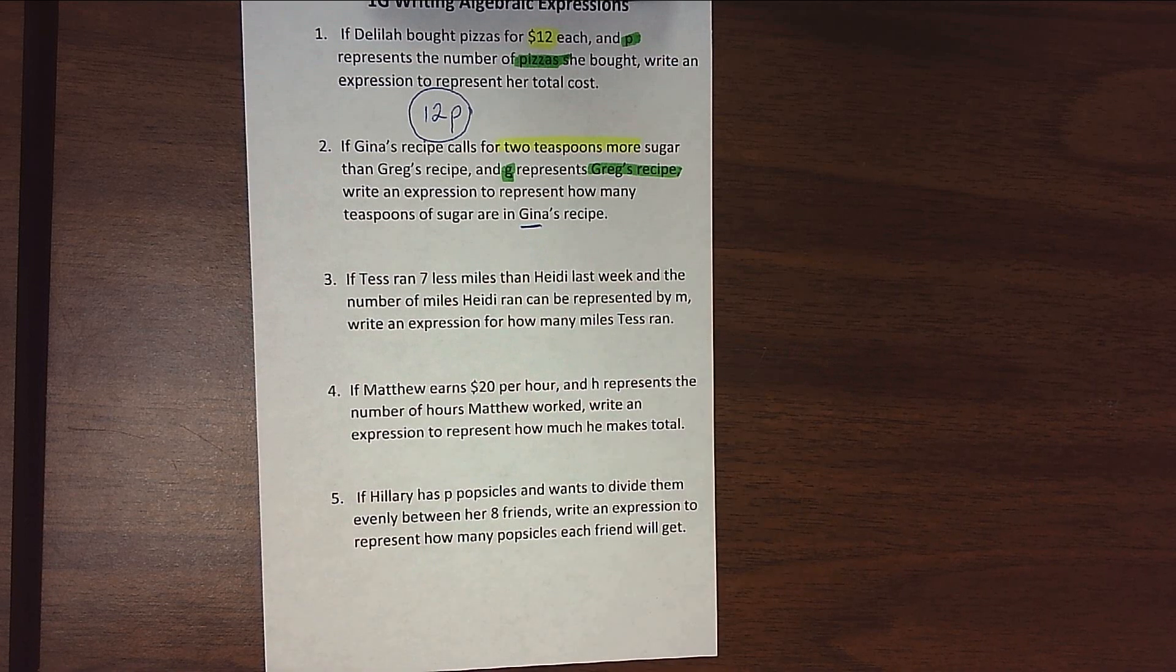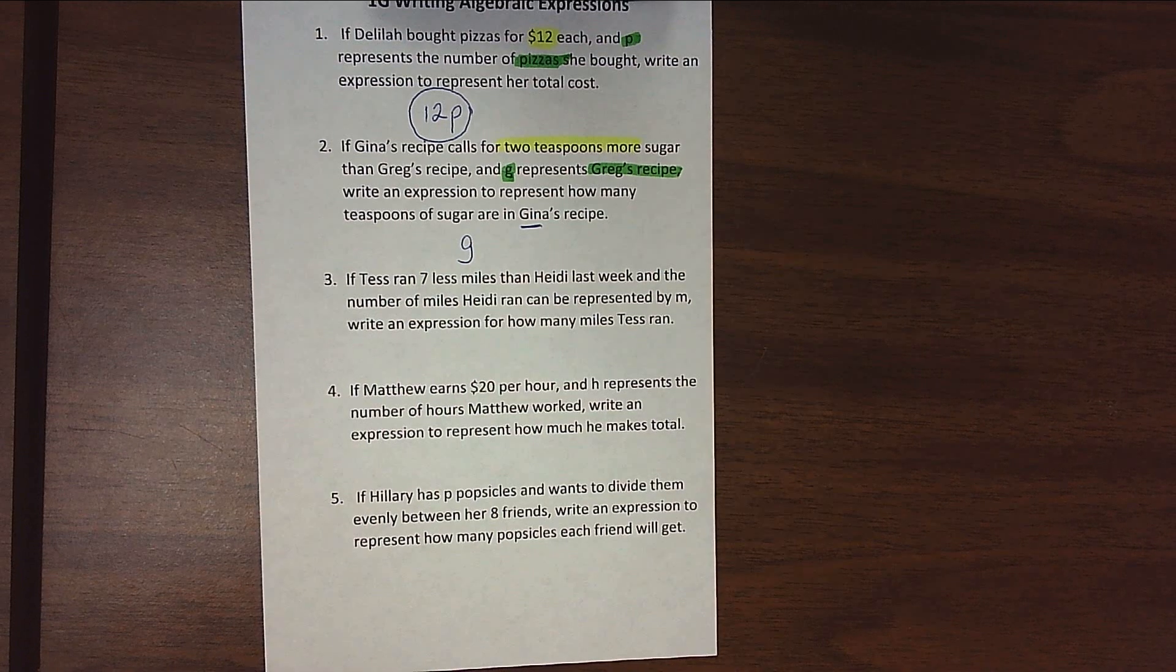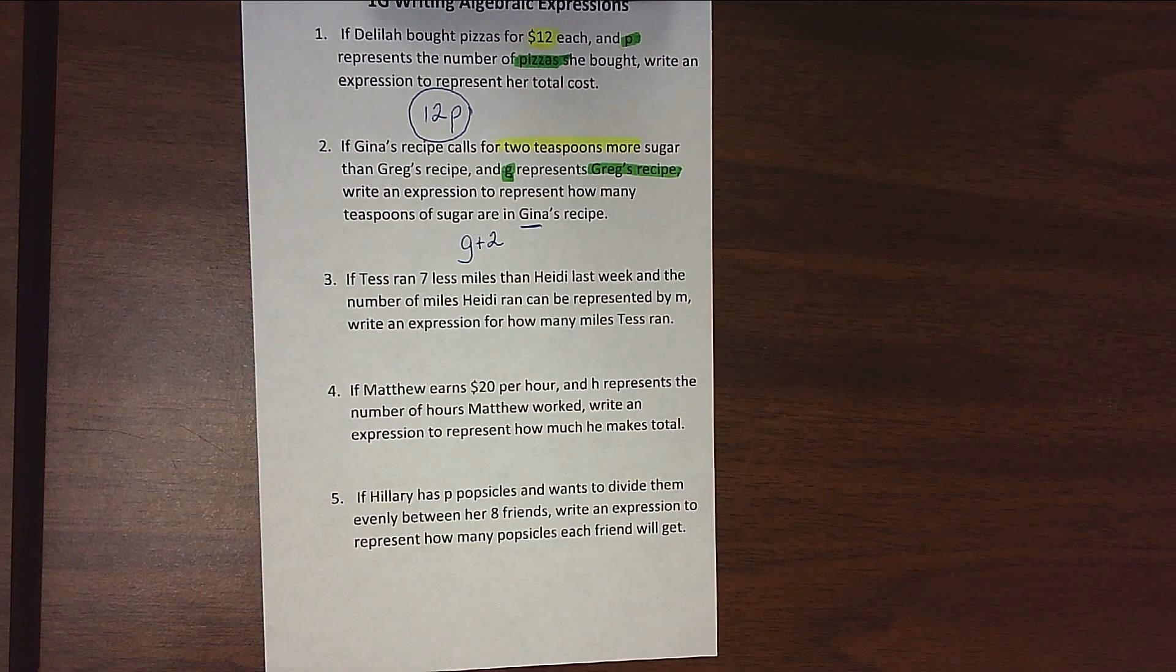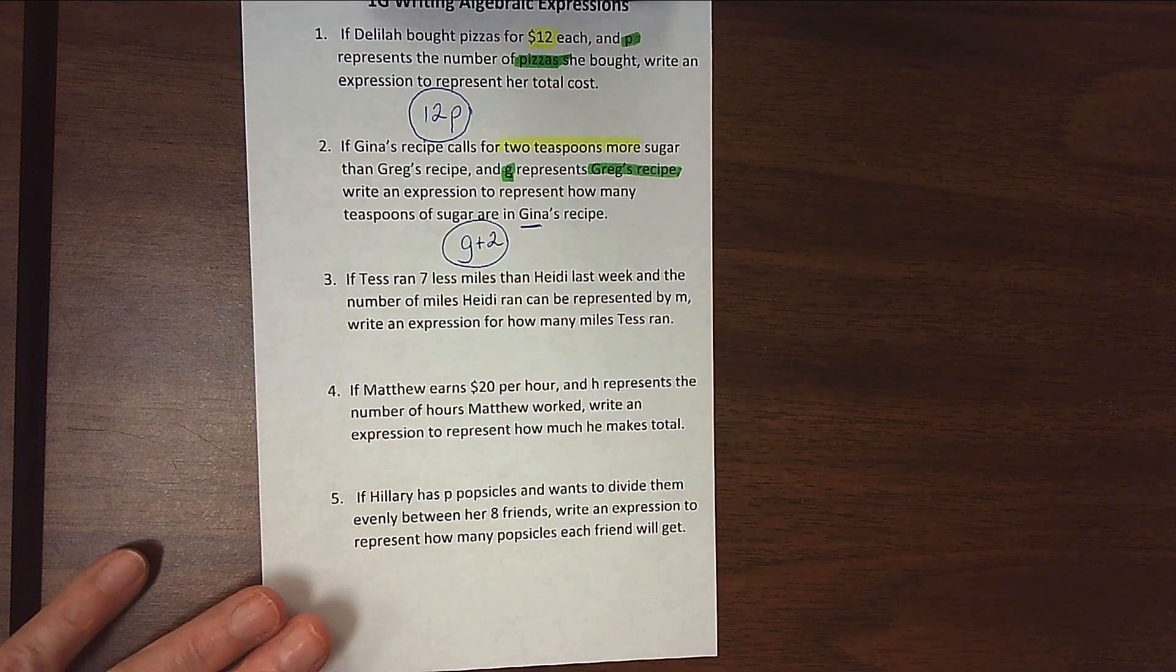We're looking for Gina's recipe. Well, we know that Greg's recipe has G teaspoons of sugar, and we know that Gina's has to have two more. So G plus two would tell us how much sugar is in Gina's recipe.